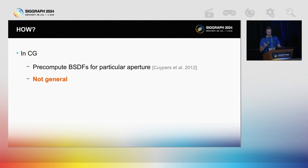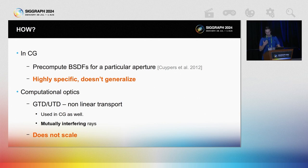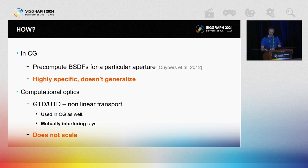So what has already been done in computer graphics? Very little — some work pre-computed BTDFs for particular apertures, but this is limited and only applies to mostly toy examples. Elsewhere, a lot has been done — please check the paper. I will only note that in competing methods, light transport becomes non-linear due to the use of mutually interfering primitives, which renders many of the sampling techniques we regularly use in path tracing irrelevant or much weaker. Therefore these methods do not scale. Our method is unique in remaining linear.